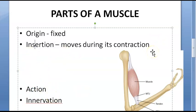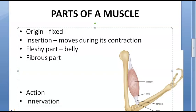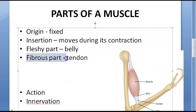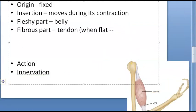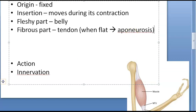The two main structural parts of a muscle are: the fleshy part called the belly, which is the contractile part, and the fibrous part which is non-contractile and inelastic, called the tendon. The tendon is cord-like or rope-like. When the tendon is flattened, it is called an aponeurosis.